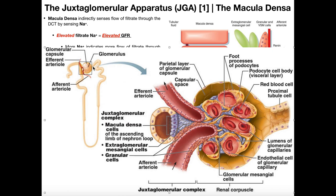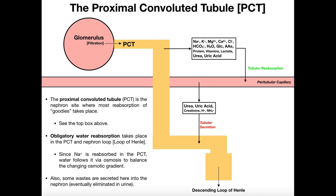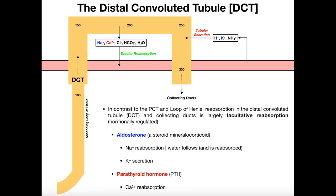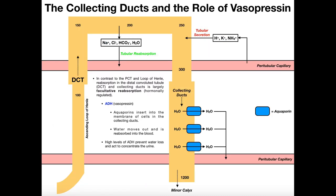From the renal corpuscle, anything that's filtrated goes through the proximal convoluted tubule, down through the descending loop of Henle, across the loop, up the ascending loop of Henle, and then of course through the distal convoluted tubule. When we covered this tubule system separately, I tended to draw them as if they're all isolated — there's the PCT, here's the loop of Henle, there's the DCT and collecting ducts.